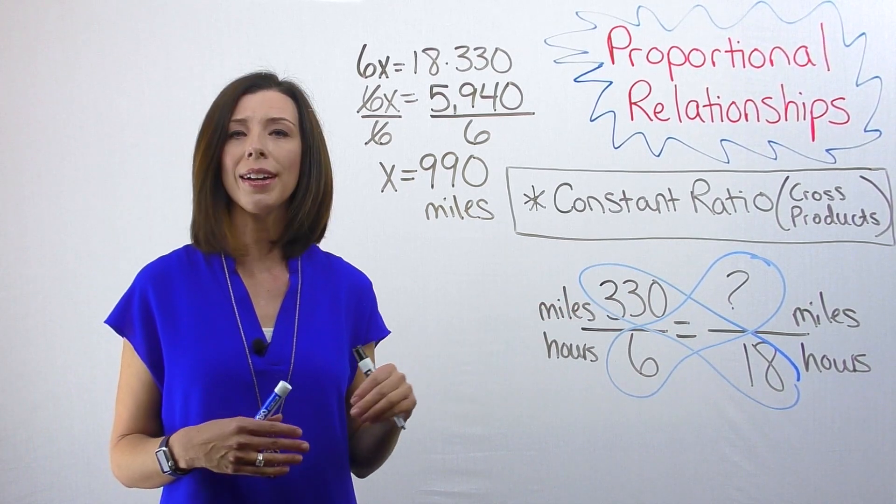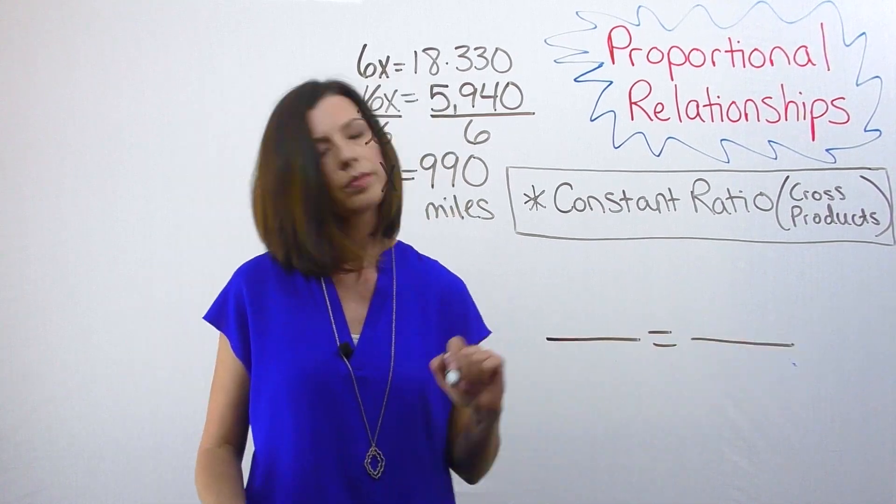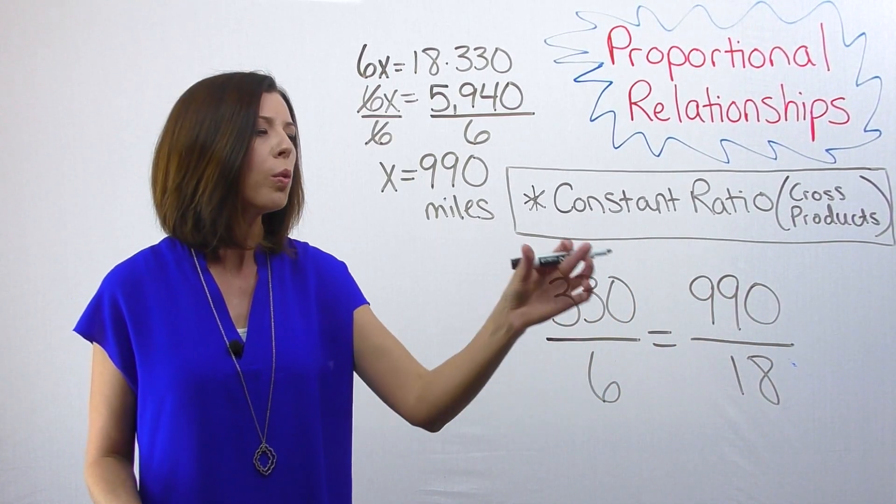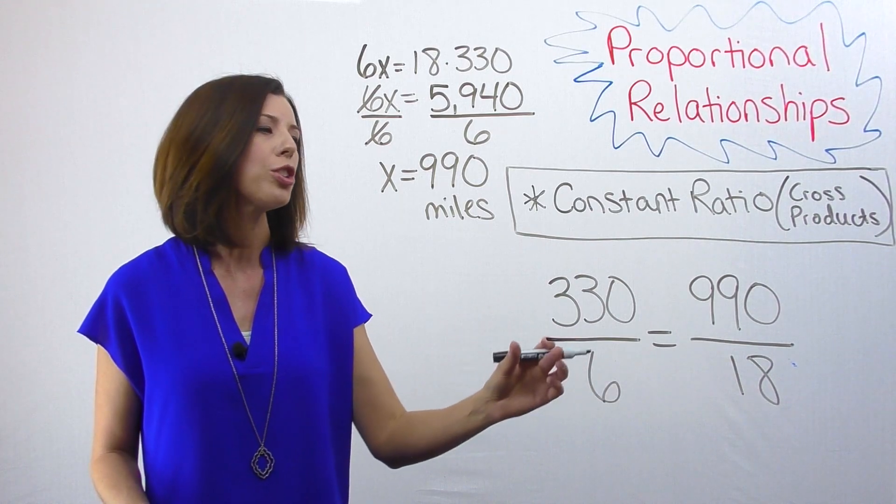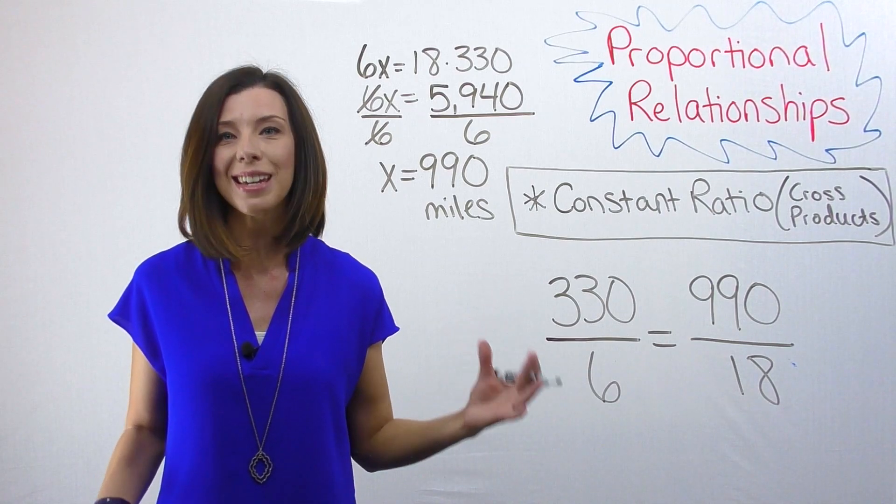Again, I can plug this in and check. My cross products must be equal if it is proportional. I want you to notice that with a constant ratio, we're literally thinking about this as a ratio, and for proportional relationships these two ratios must be equal.